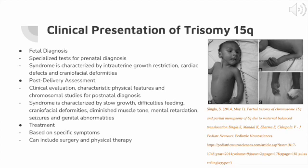Post-delivery, trisomy 15 can be diagnosed by clinical evaluation, characteristic physical features, and chromosomal studies. Common symptoms include slow growth, difficulties feeding and swallowing, and craniofacial deformities. These feeding and swallowing difficulties can be life-threatening if food is aspirated into the lungs. The craniofacial deformities can also cause a buildup of cerebrospinal fluid, putting pressure on the brain. Additionally, some children with trisomy 15 can have tall statures, diminished muscle tone (hypotonia), mental retardation, seizures, and genital abnormalities.